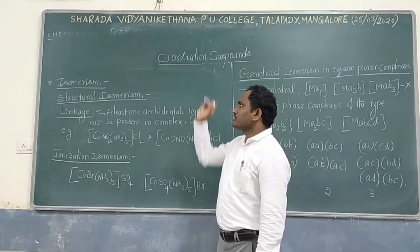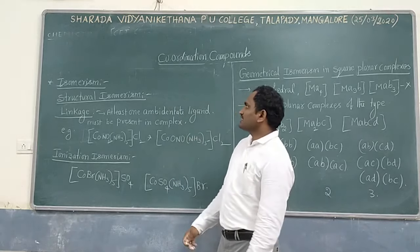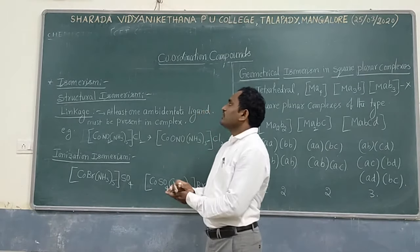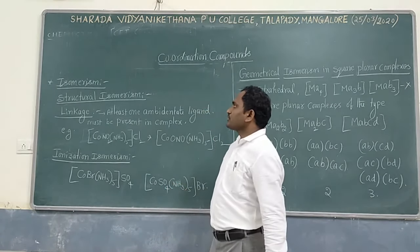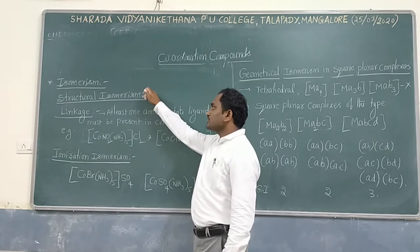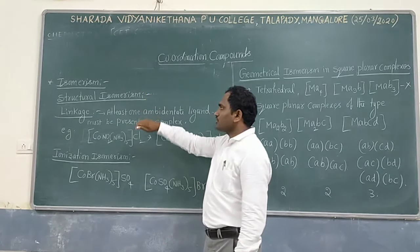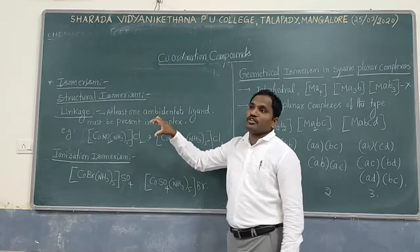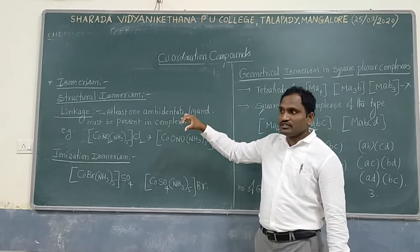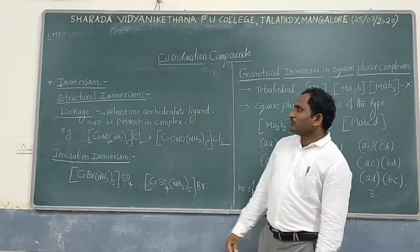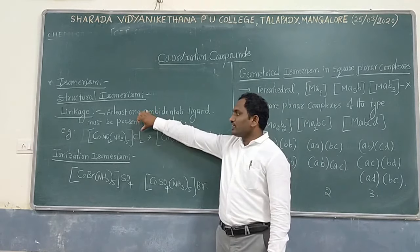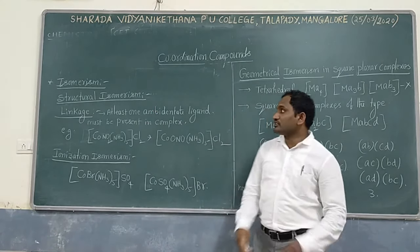Next topic: isomerism. This isomerism is also very important in this chapter. There are two types of isomerism. One is structural isomerism. In structural isomerism, two isomerisms are very important. I am not going to discuss all types, because frequently they are asking about linkage and ionization isomerism applications.